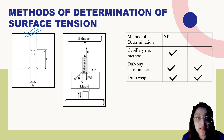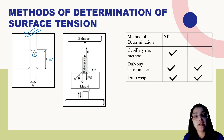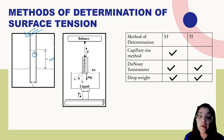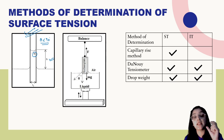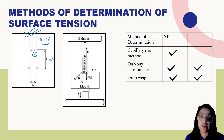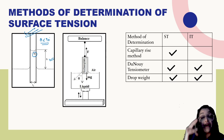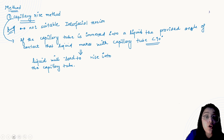The liquid rises in the capillary tube up to height h. This continues only when the contact angle is less than 90 degrees. The adhesive forces between the liquid and the capillary wall are greater than the cohesive forces between the water molecules. The liquid continues to rise until the upward surface tension force is balanced by the weight of the liquid, which is the force of gravity (mg).